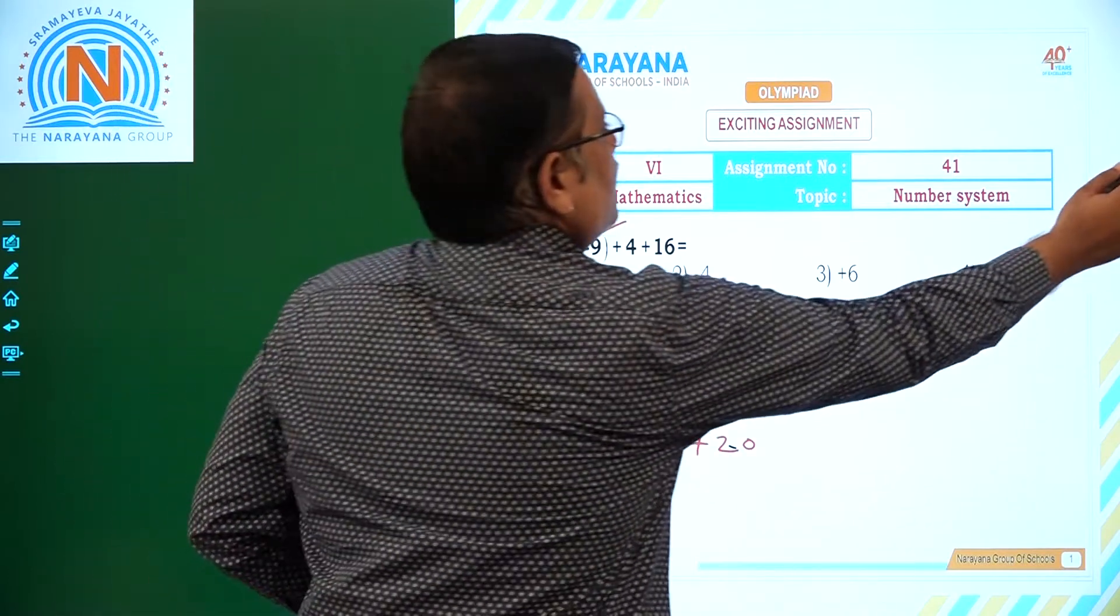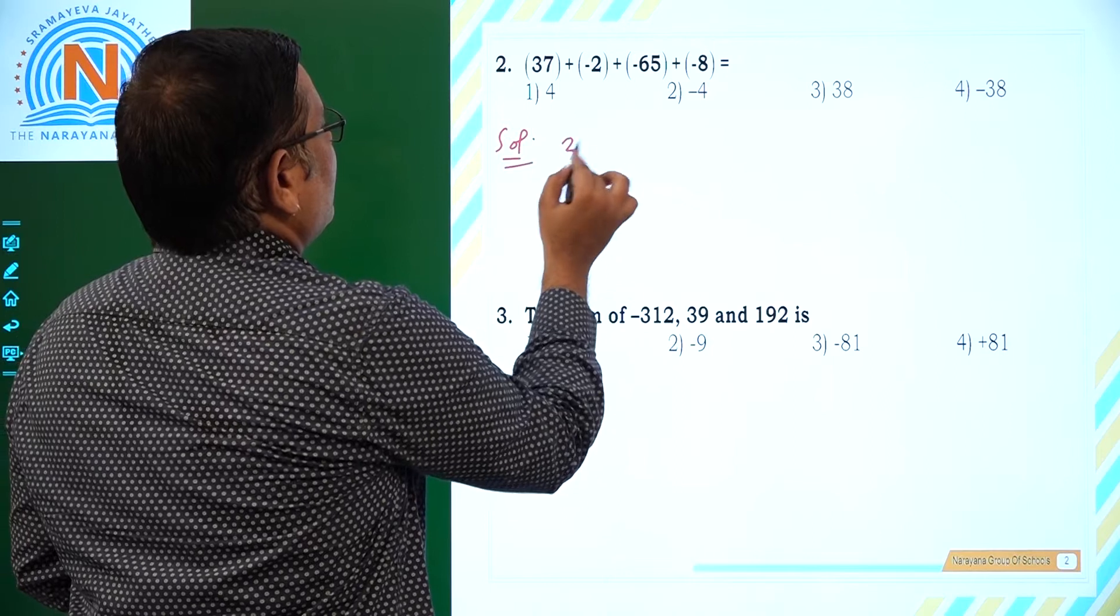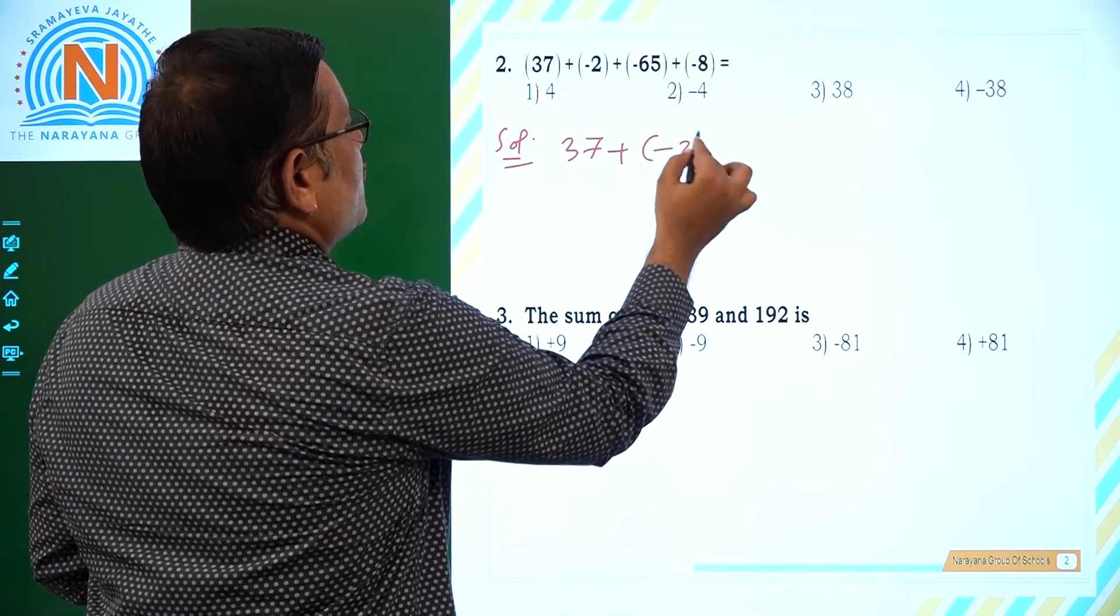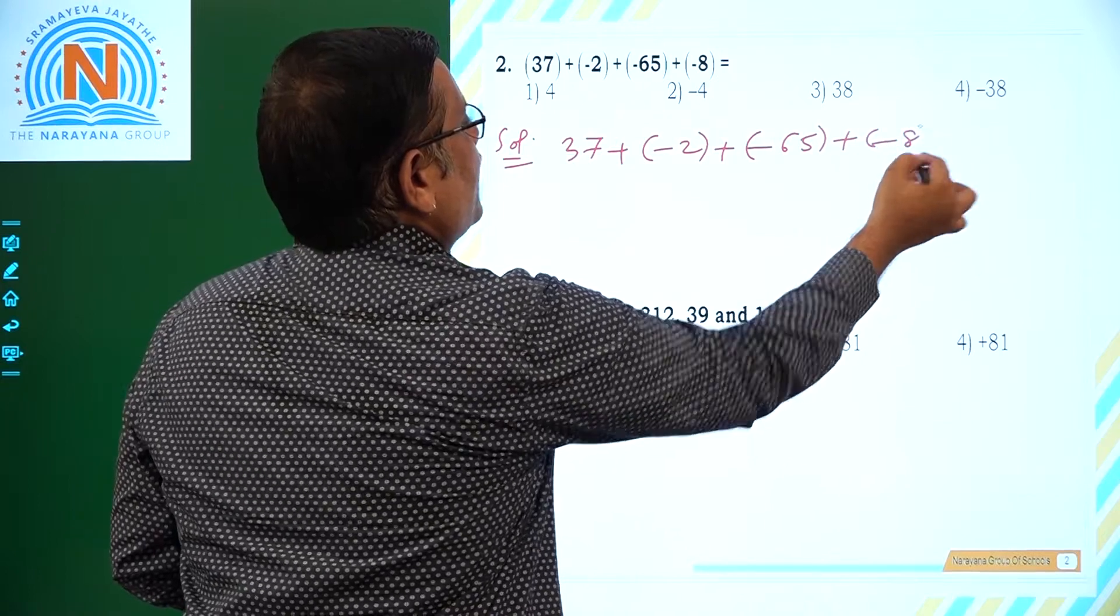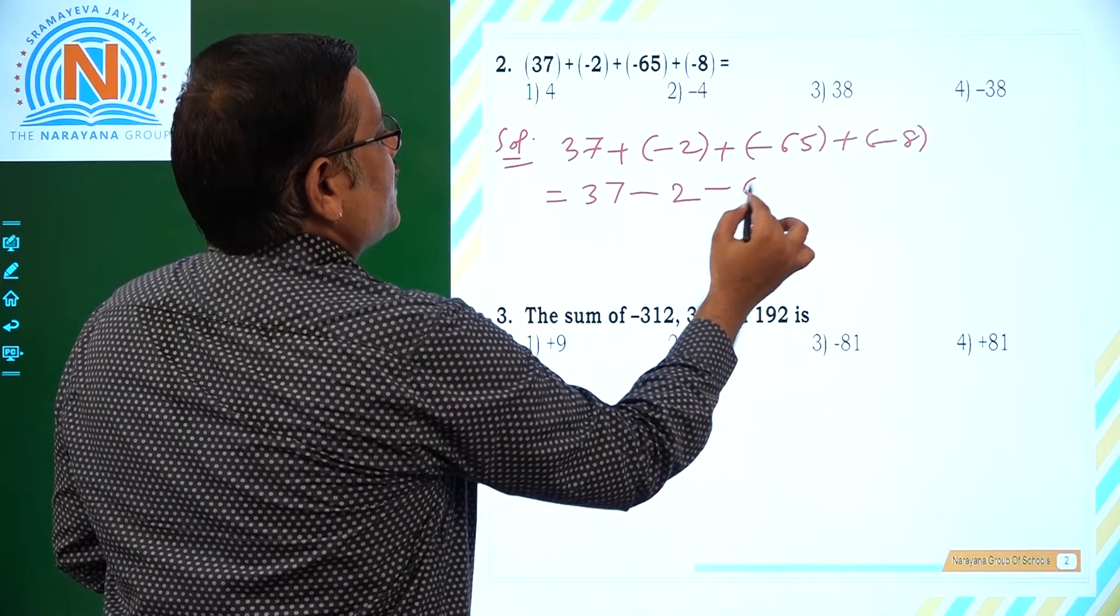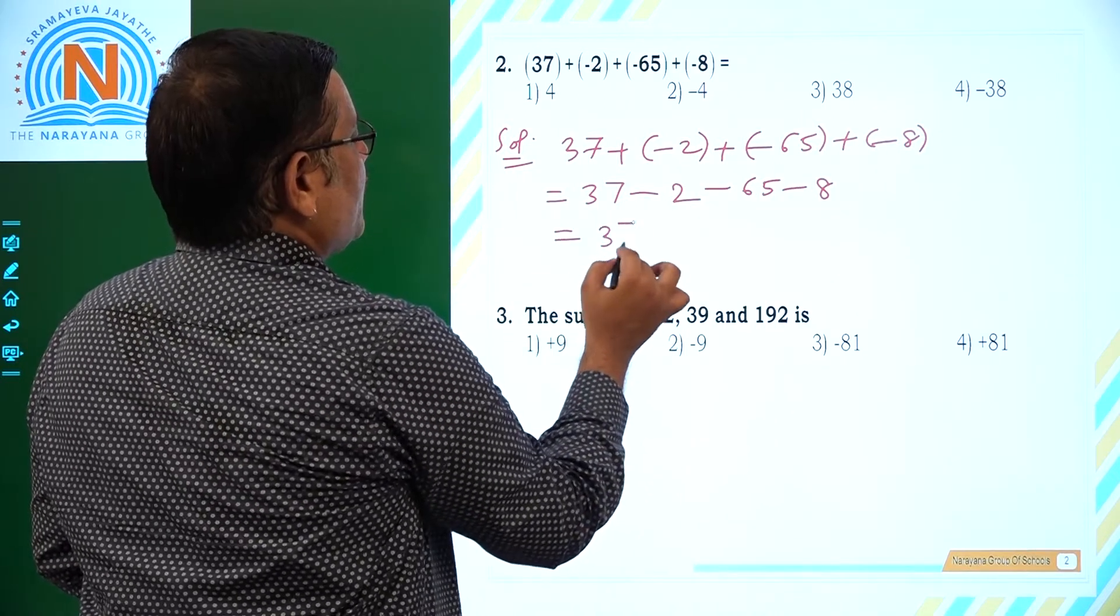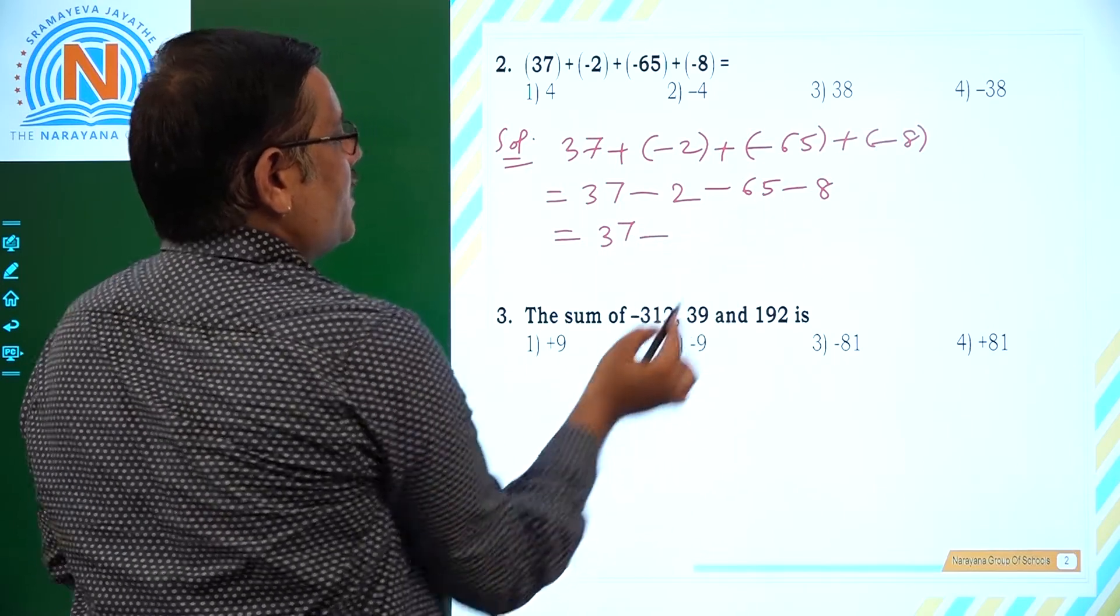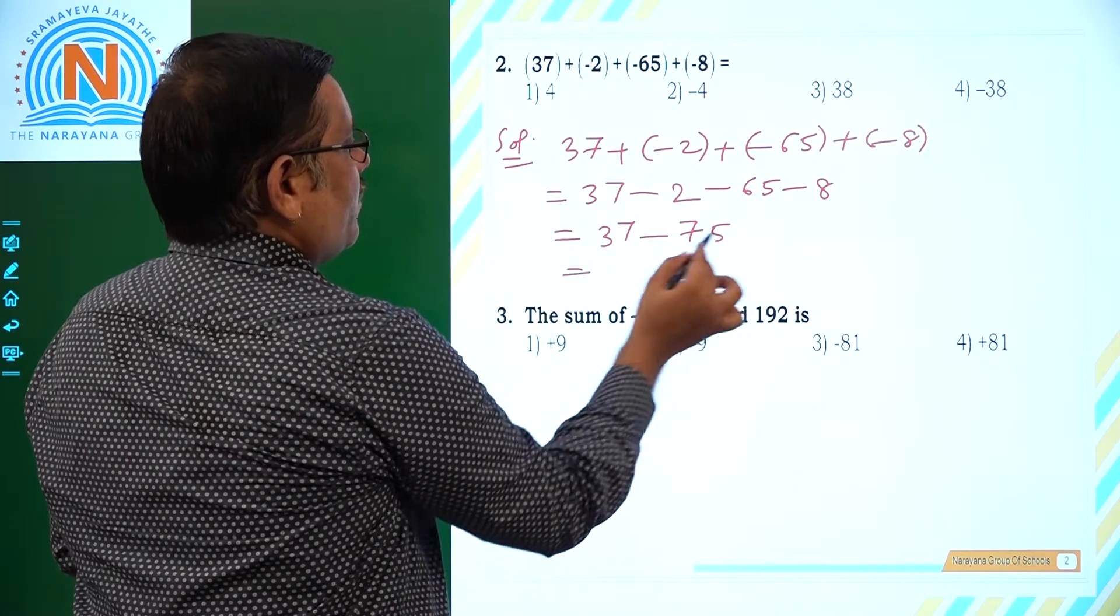Now, let us see the next question. 37 + (-2) + (-65) + (-8). So that is 37 plus, minus is minus 2 plus, minus is minus 65 plus, minus is minus 8. So we have to simplify, 37 - 2 - 65 - 8. These three you have to add up, that is -75. 37 - 75.